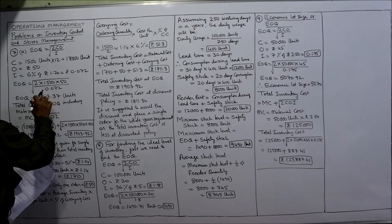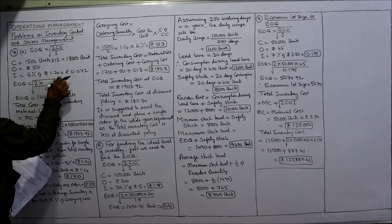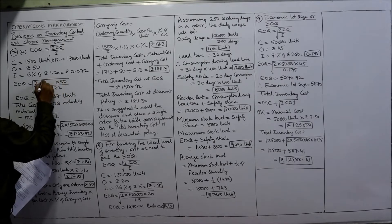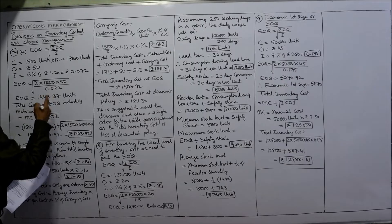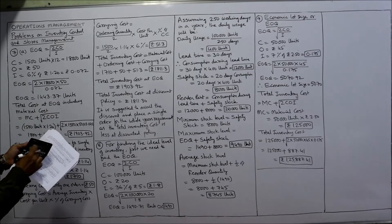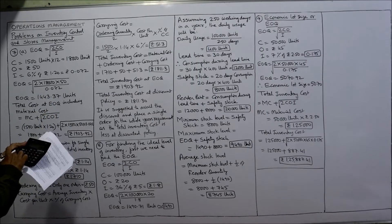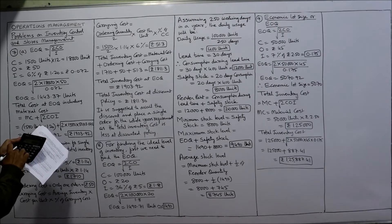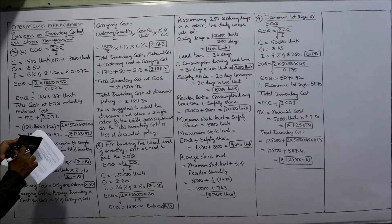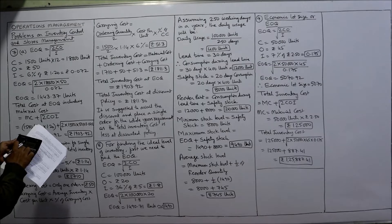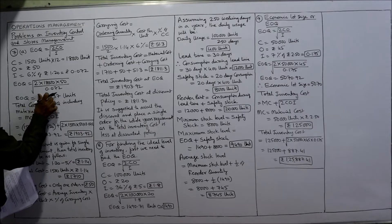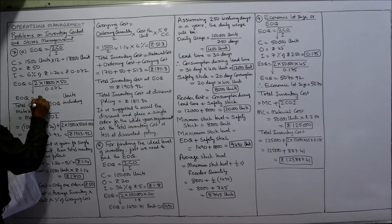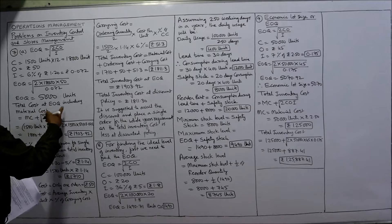Substituting into the EOQ formula: 2 into 18,000 into 50 divided by 0.072. Calculating this gives 25,00,000 under the root, which comes to 5,000 units. So the EOQ is 5,000 units.